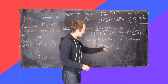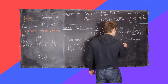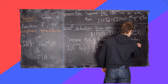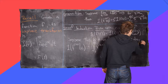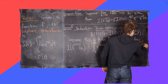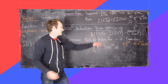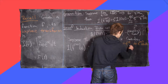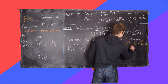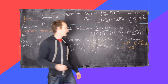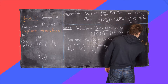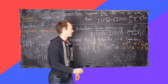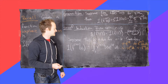We can attack this integral with integration by parts. We'll let u equal e to the minus st, and we'll let dv equal the (k+1)th derivative of f. That gives us du equal to minus s e to the minus st dt by the chain rule, and v equal to the kth derivative of f. Now we have our entire integration by parts setup.